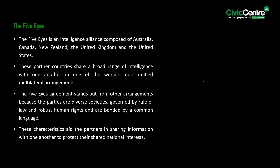The next article covers the Five Eyes Alliance. Five Eyes is an intelligence alliance composed of Australia, Canada, New Zealand, the United Kingdom, and the United States. These partner countries share a broad range of intelligence with one another in one of the world's most unified multilateral arrangements. The Five Eyes Agreement stands out because the parties are diverse societies governed by the rule of law, with robust human rights protections, and are bonded by a common language.